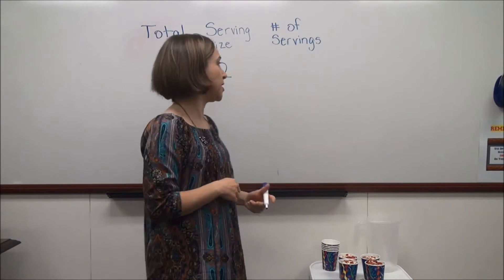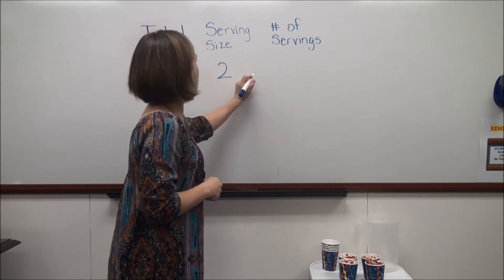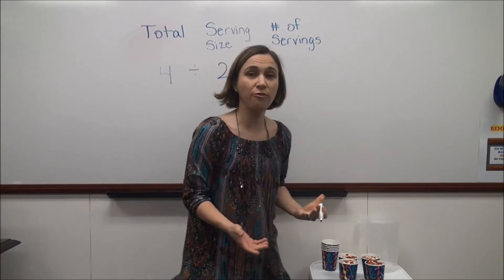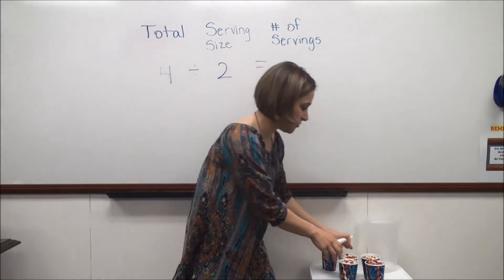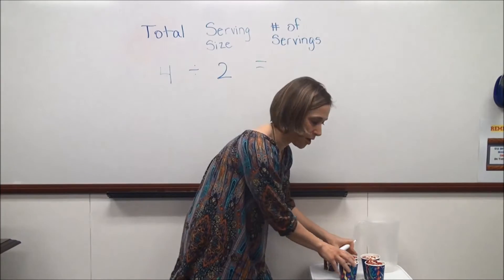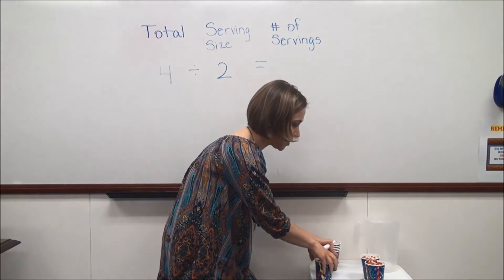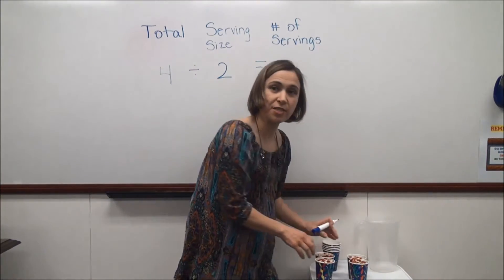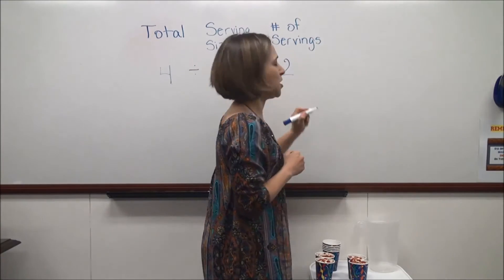That's right, division or repeated subtraction. So I could do four divided by two, or four, and repeatedly subtract that serving size of two cups. I have four cups. Here's a two-cup serving size. Here's a two-cup serving size. That means I can serve two people.